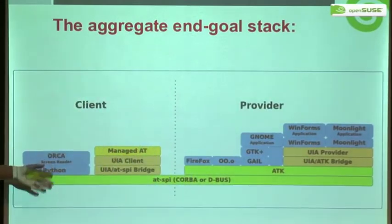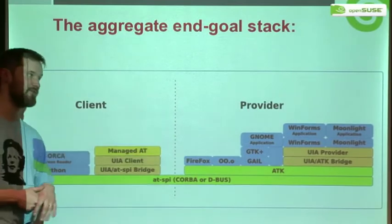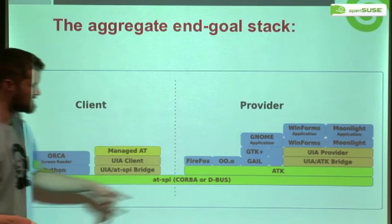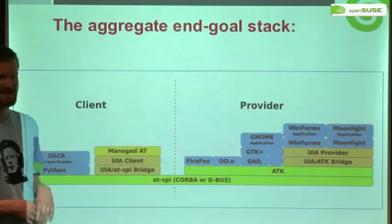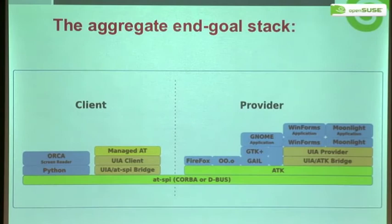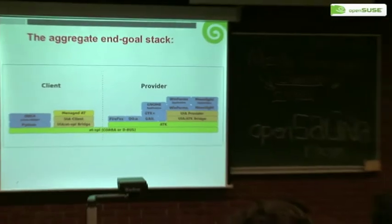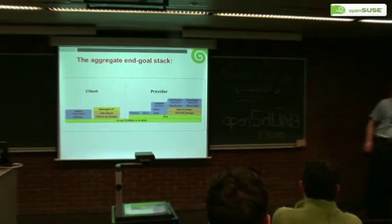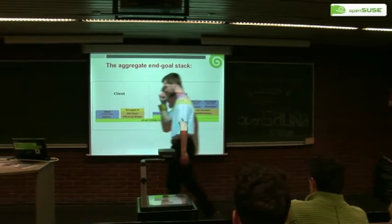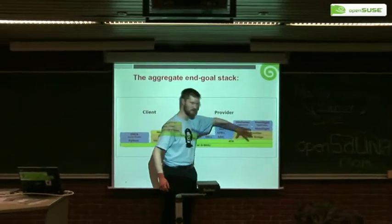That's basically the first phase of the project — to do this piece of the stack. That will mean that using your existing Orca screen reader, hopefully you'll be able to access your WinForms app. So that's good. And in the second phase, having done the provider — arguably the most useful piece — we're then moving on to doing the client piece, so you could run your own AT.